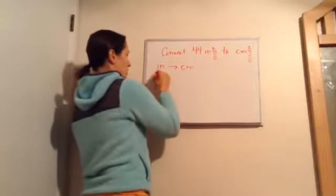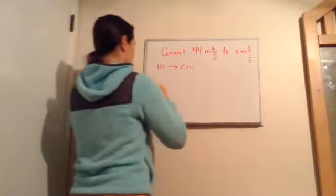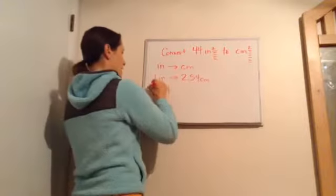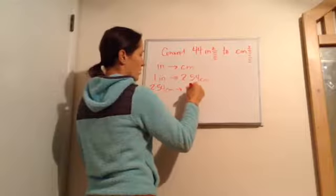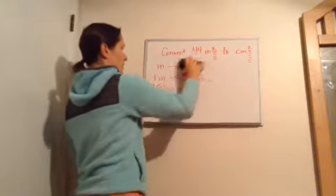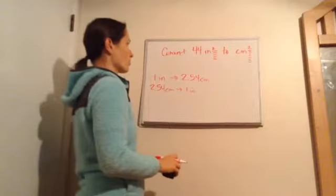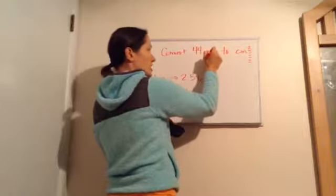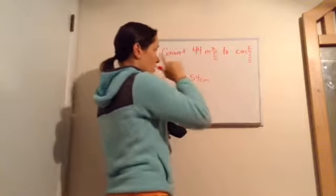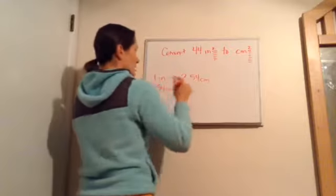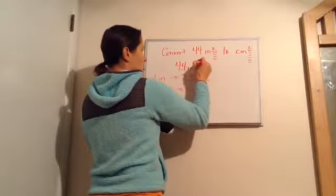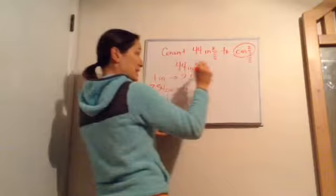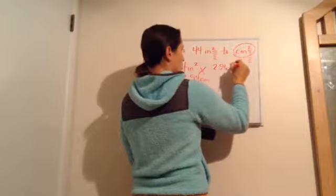Hopefully you remember from our unit multipliers: is there a conversion that goes from inches to centimeters? 1 inch is the same thing as 2.54 centimeters, and 2.54 centimeters is the same thing as 1 inch. That is something you definitely need to memorize. Now, since we're converting the 44 inches squared to centimeters squared, I want my centimeters on top: 2.54 centimeters over 1 inch.